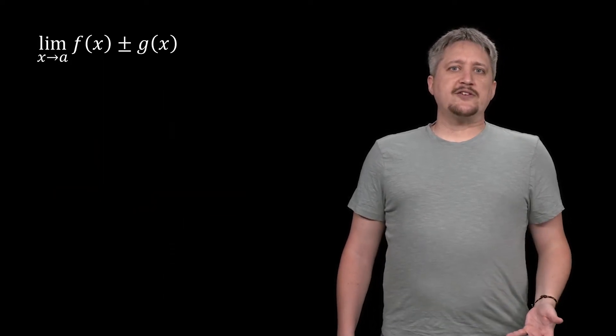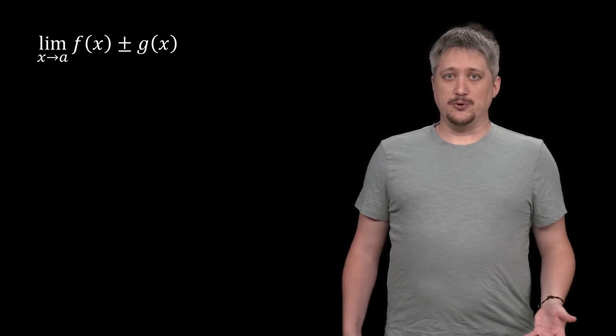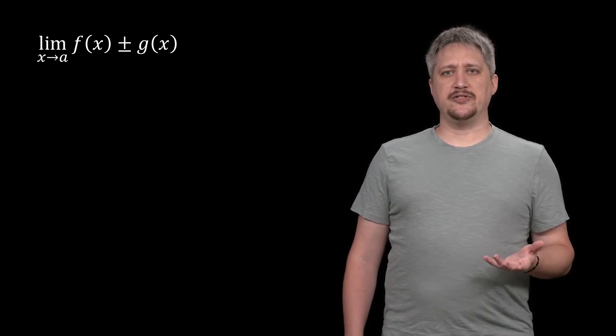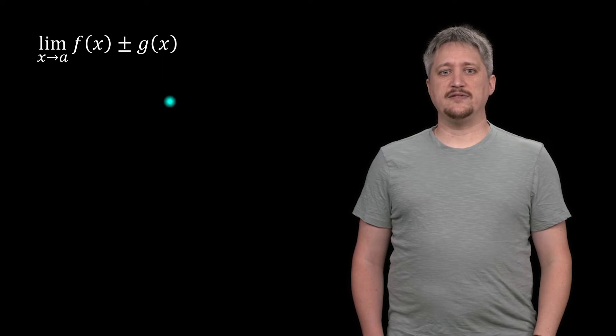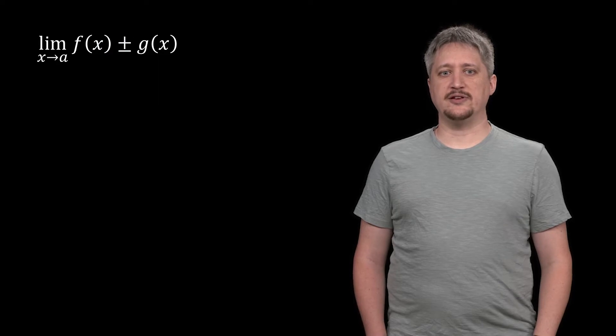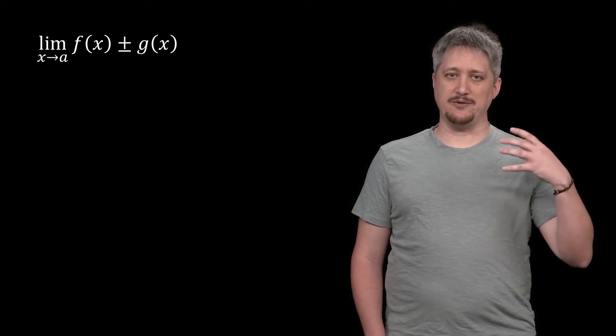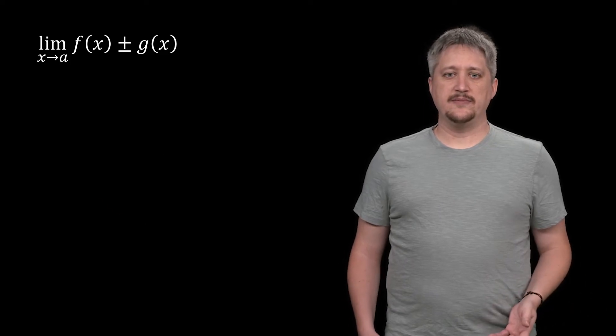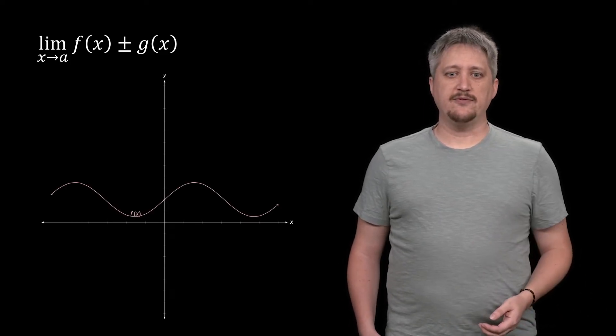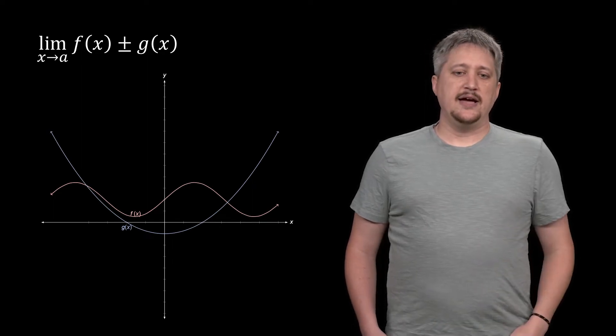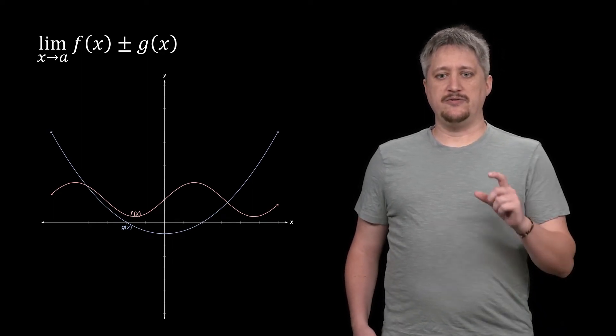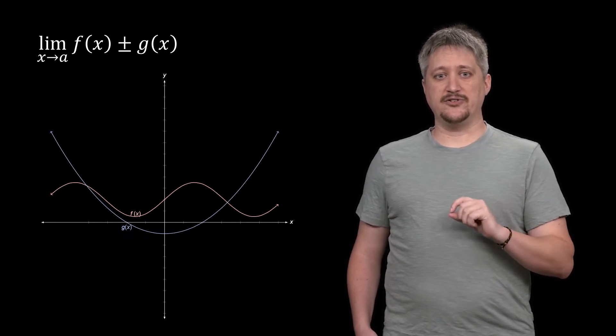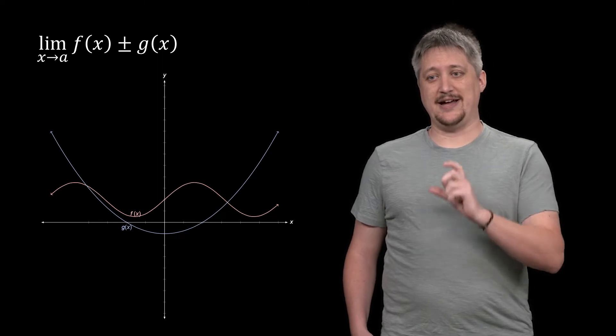The next one, arguably one of the more useful ones, is this idea of the limit of a sum or difference. Just in case you haven't seen it before, this symbol here, plus/minus, is just saying sum or difference—it would be one or the other. This is a way of representing that it could be either. So we want to know, what happens when we try to add or subtract two functions?